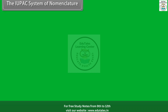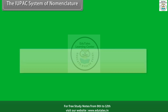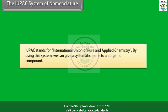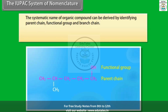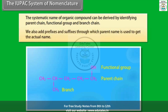The IUPAC system of nomenclature: IUPAC stands for International Union of Pure and Applied Chemistry. Using this system, we can give a systematic name to an organic compound. The systematic name is derived by identifying the parent chain, functional group, and branch chain. We also add prefixes and suffixes through which the parent name is used to get the actual name.